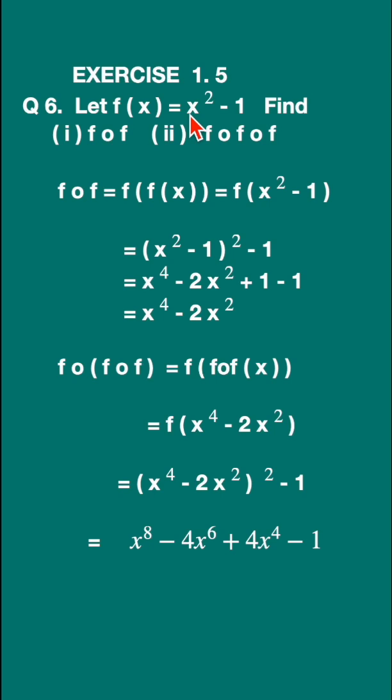So this becomes (x² - 1)², where this x should be replaced with x² - 1. So (x² - 1)² - 1. Now open the bracket. This becomes x⁴ - 2x² + 1 - 1. So this will cancel. You get x⁴ - 2x².